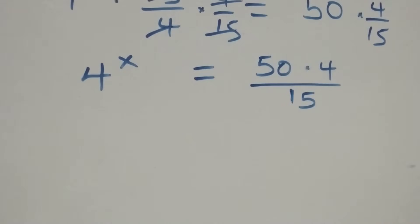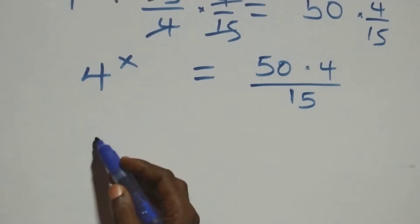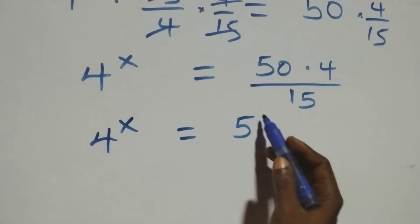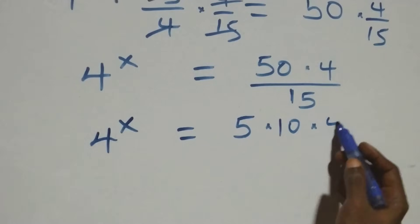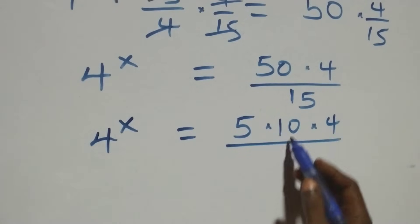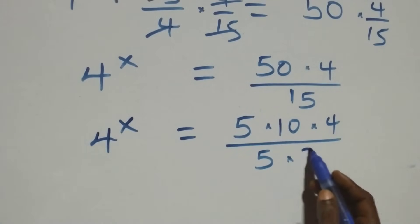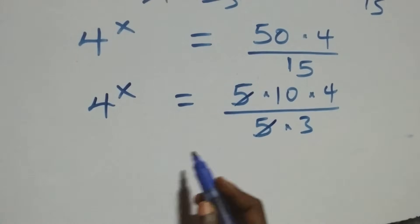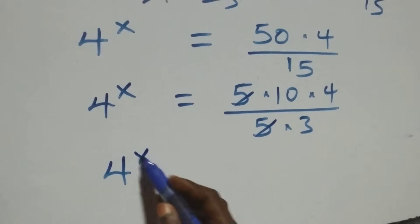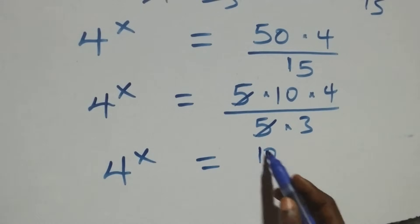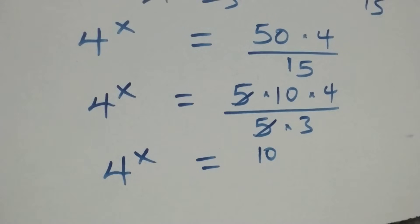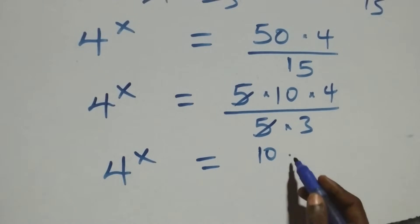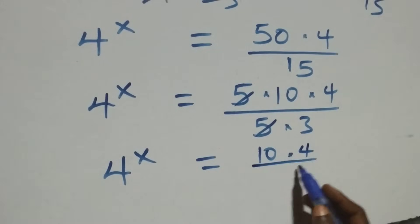This can be written as 4 raised to power x equals 5 times 10 times 4 over 5 times 3. The 5s cancel each other, and we have 4 raised to power x equals 10 times 4 over 3, which is 40 over 3.